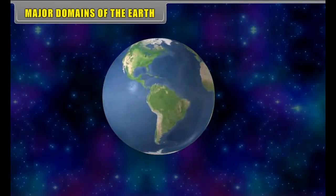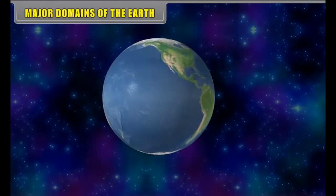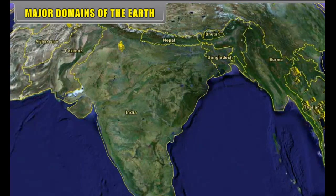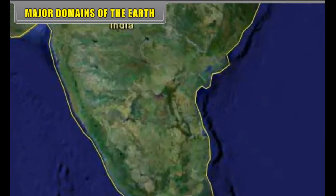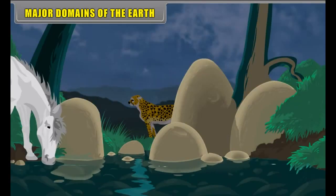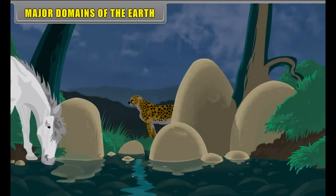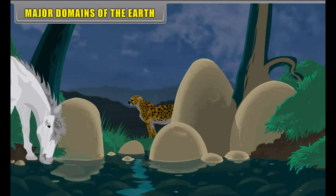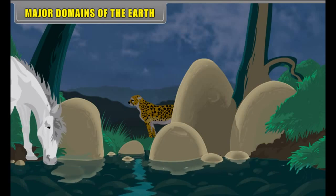Major domains of the earth. Our earth has a unique distinction of being at a reasonable distance from the sun. The earth provides a suitable environment which is favorable for the origin and sustenance of all types of life — human life, plant life and animal life.